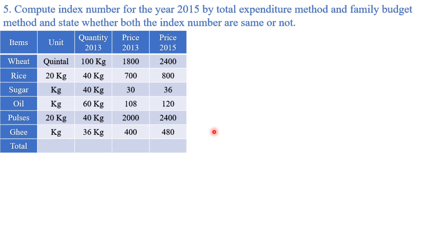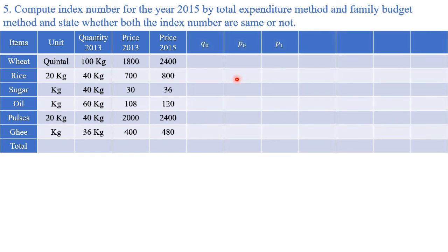This will be one of the longest tables you draw — you may need to divide your table into two parts: the first after conversion, the second for the total expenditure and family budget method columns. First step is converting the data according to the provided units: quintal, 20 kg, 20 kg, etc. For each item we may need to convert quantities or prices.